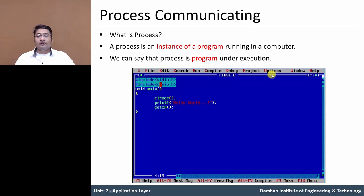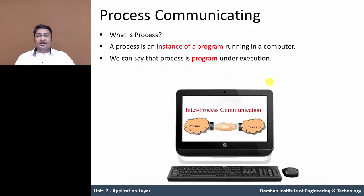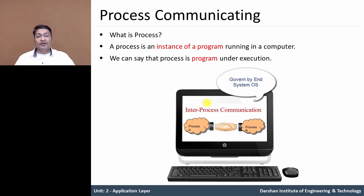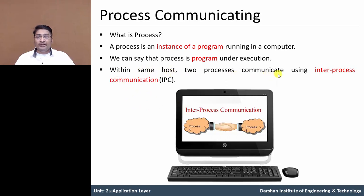So this process is a program under execution, running in any machine or host. When processes are running on the same host or same end system, they can communicate with each other. Process A and process B communicate with each other on the same host machine using inter-process communication, governed by the rules of the end system's operating system.